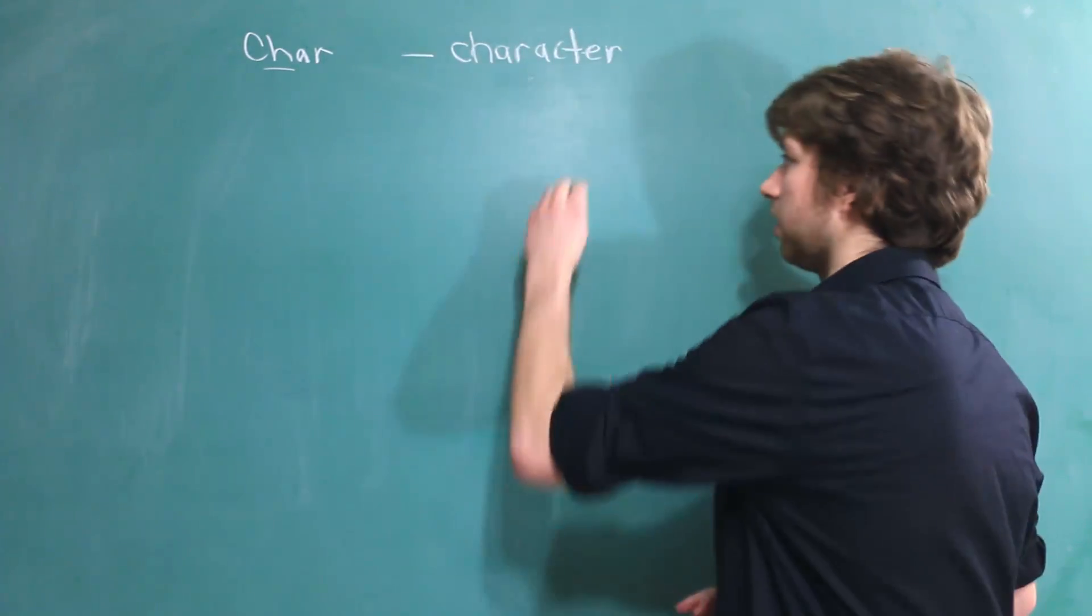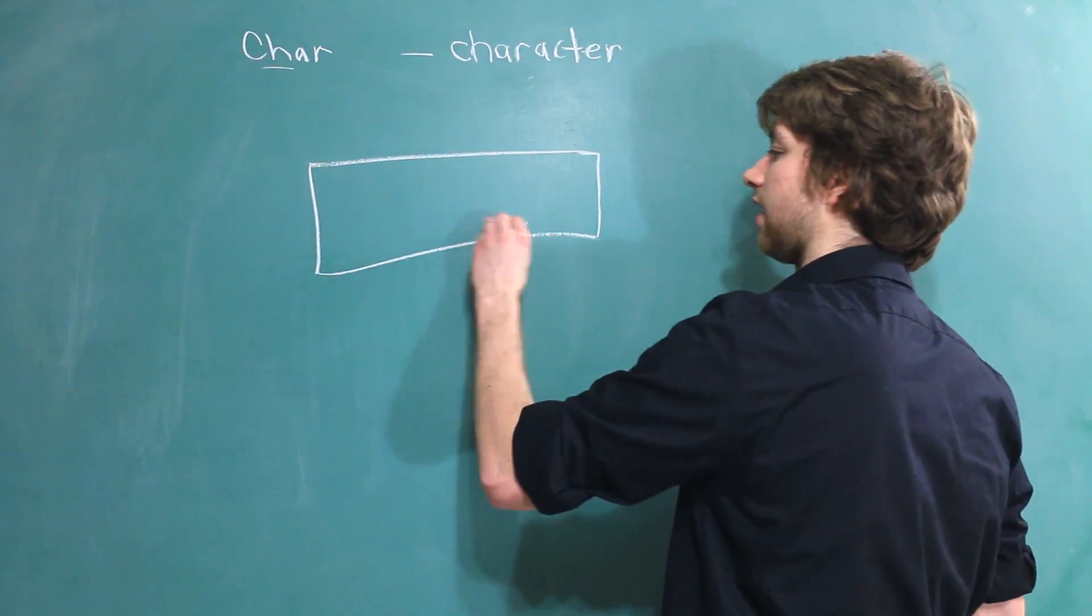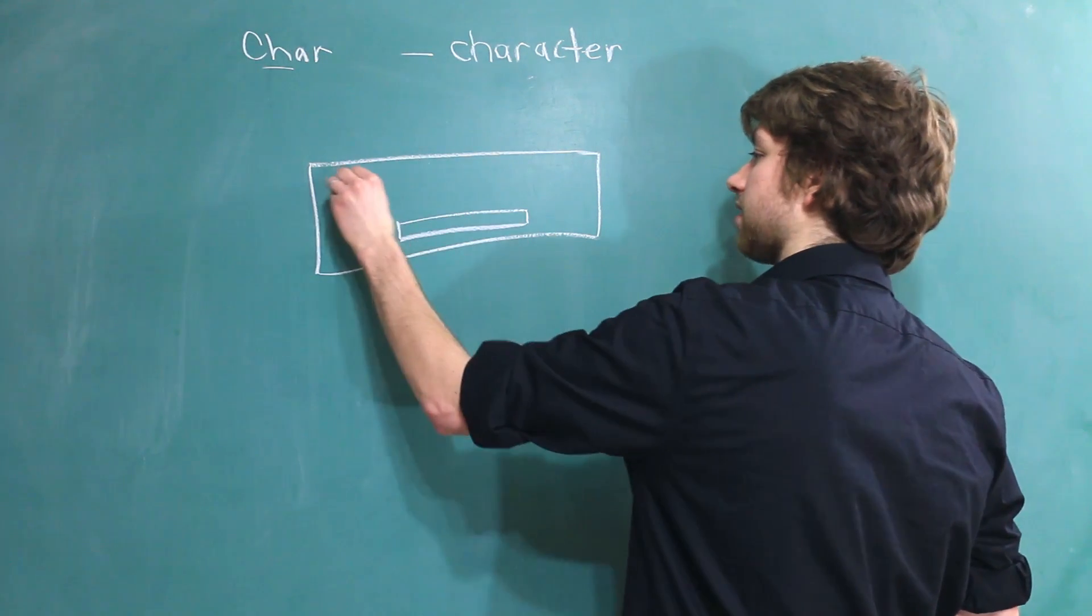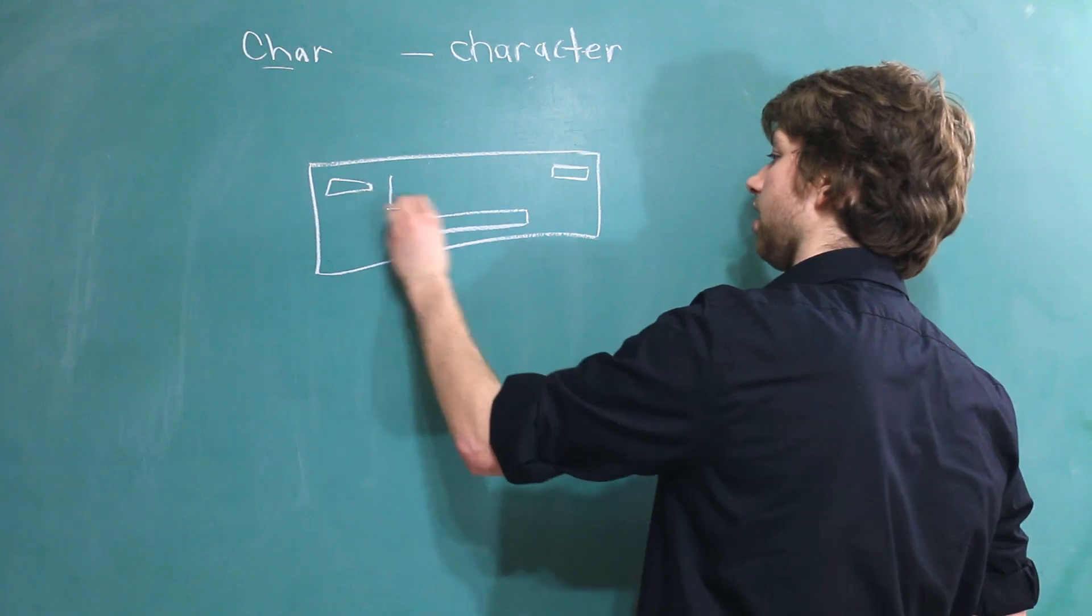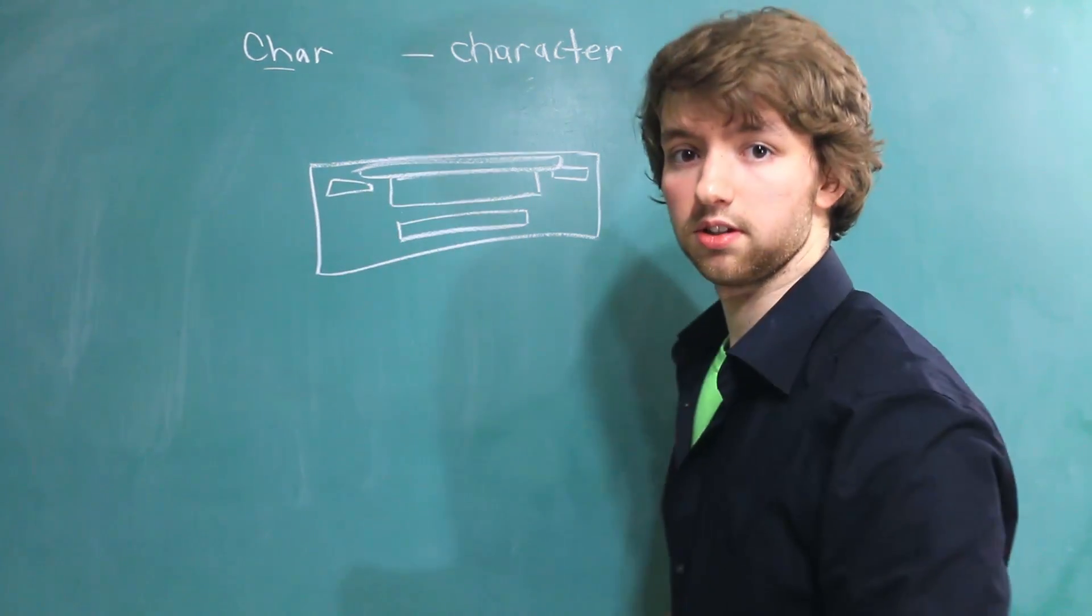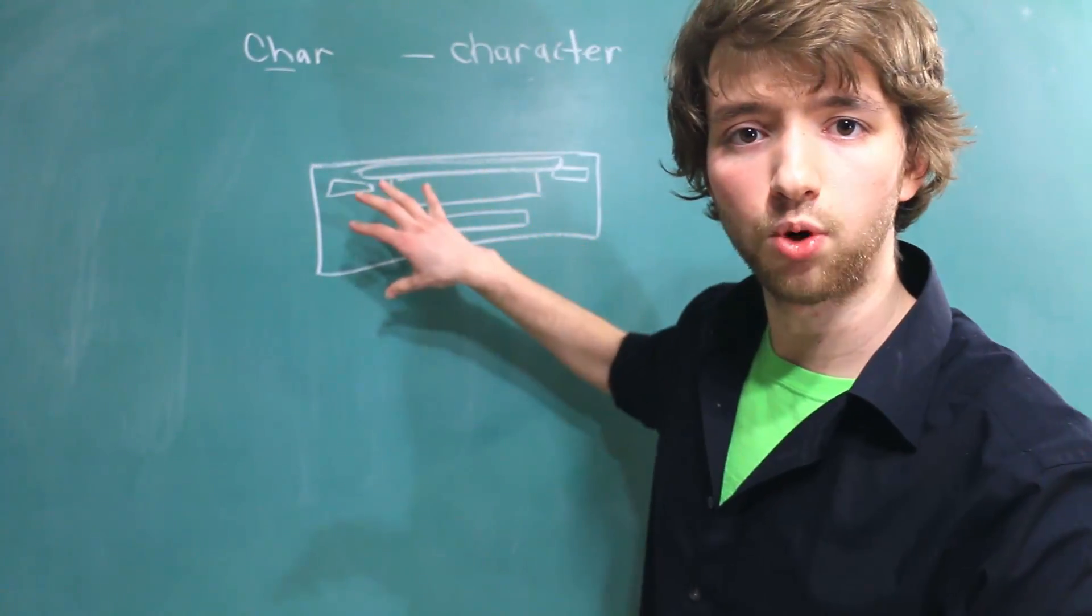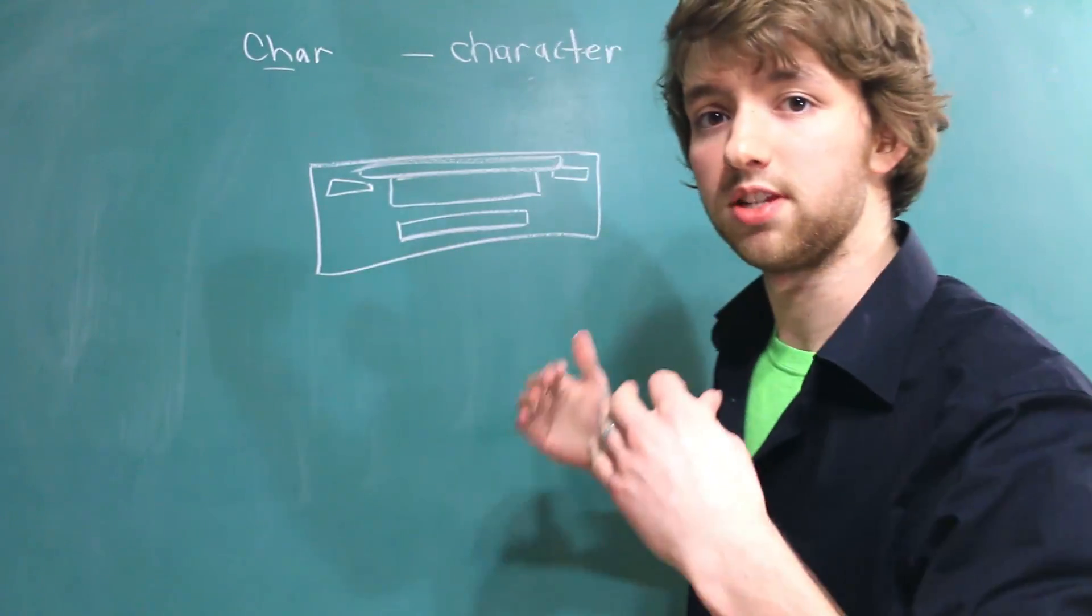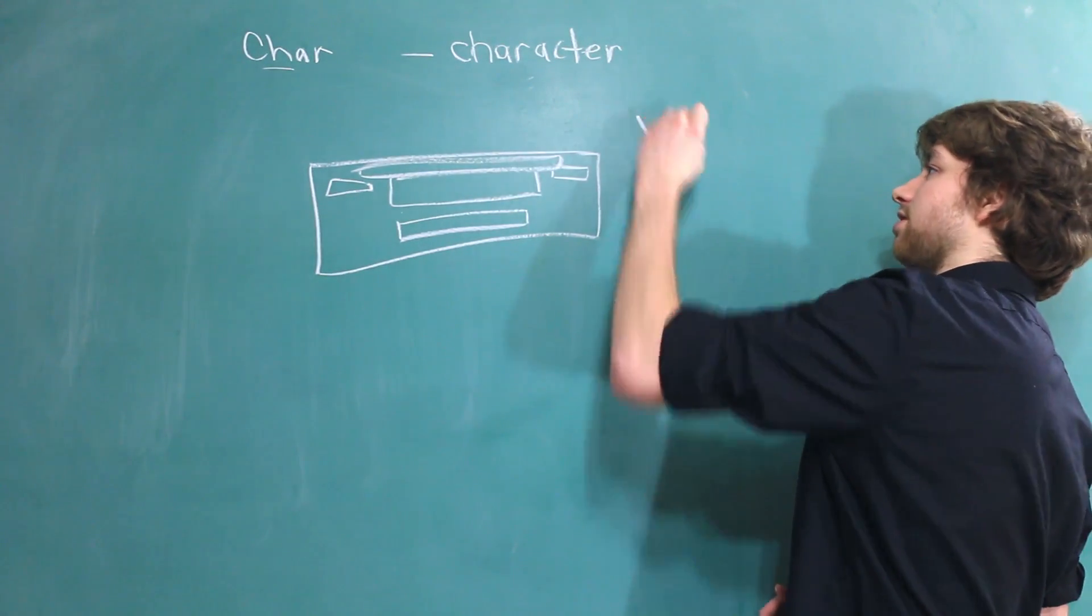So, you can generally think of a keyboard as anything on there being a character. You're going to have a space, you're going to have a tab, you're going to have a backspace, you're going to have a bunch of letters, a bunch of numbers, all that good stuff. There are some other characters that you can't visually see on a keyboard. For example, there is a null character, which you can represent as a backslash zero.